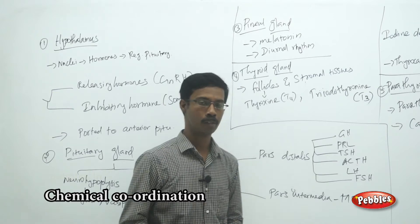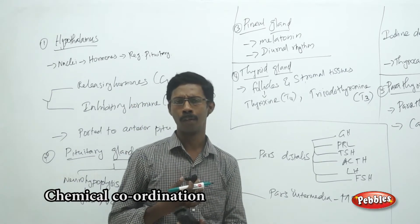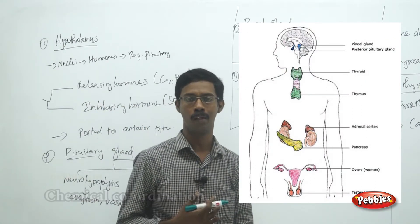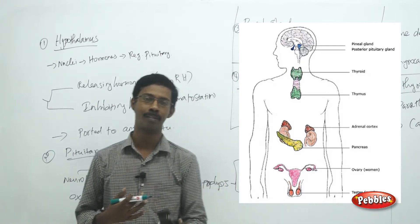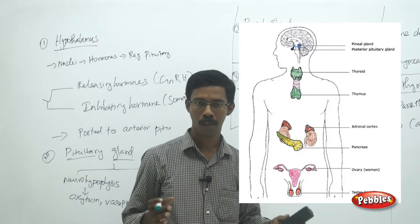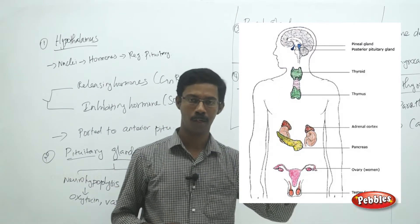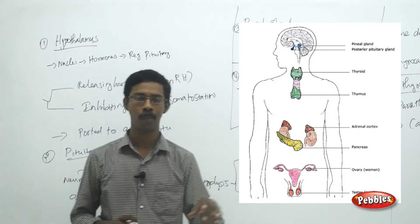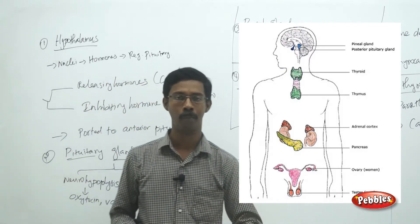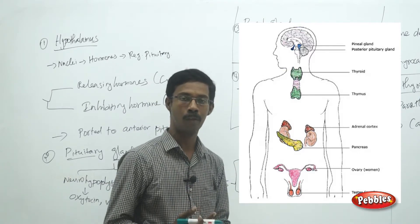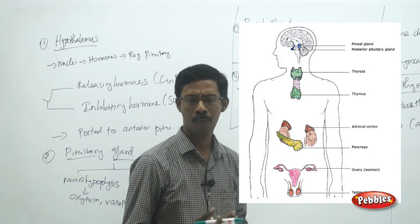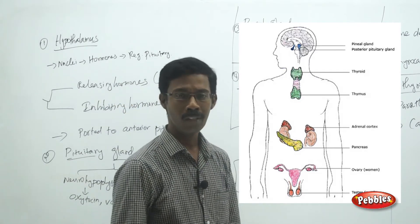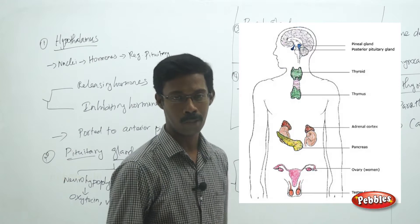We are going to continue with chemical coordination. I will list out the important glands, the hormones they produce, and their major functions. Questions can be expected as: given a gland name, identify its hormones; given a hormone name, identify its function; or given a disease, identify the hormone deficiency causing it.